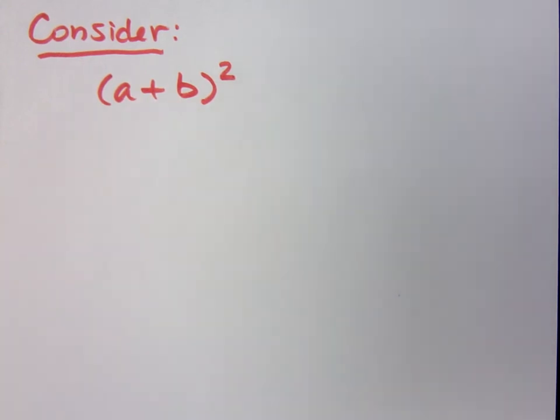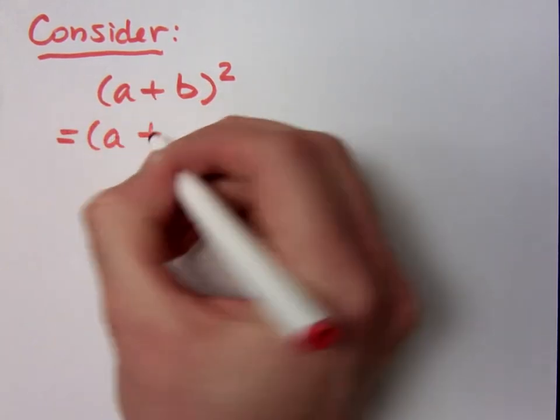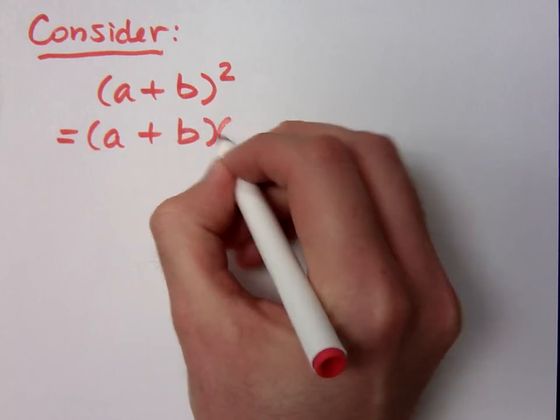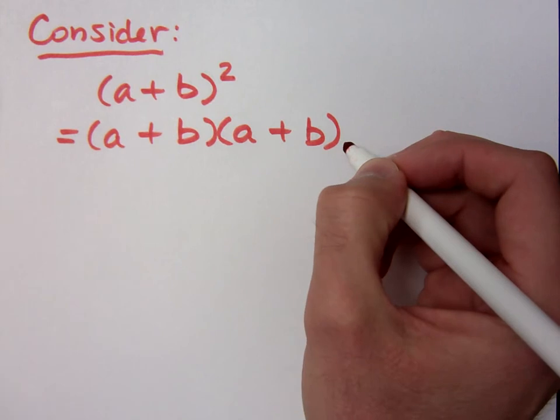What does it mean to square something? You multiply it times itself, so that means this guy literally is a plus b times what? A plus b. Do you all agree?